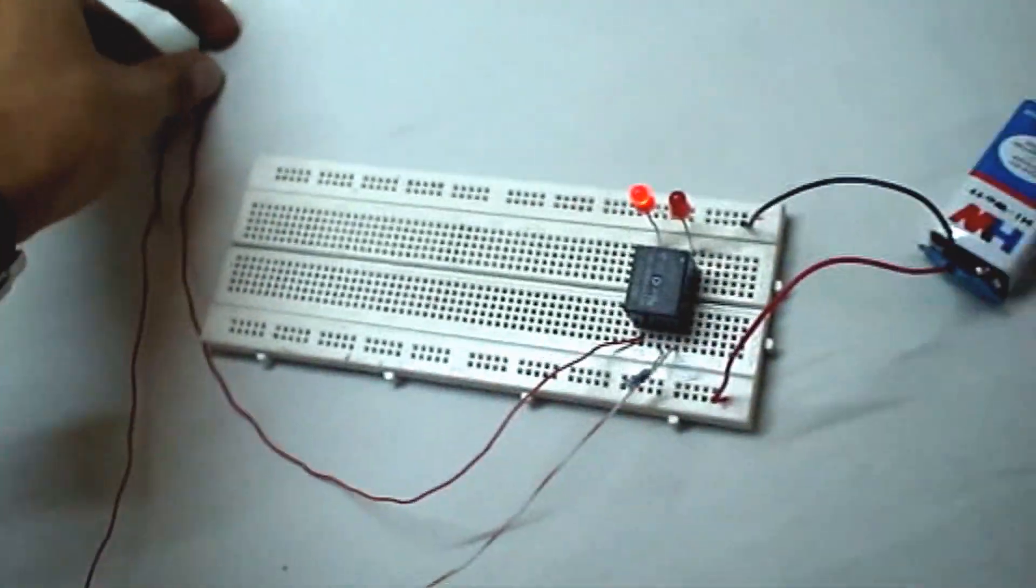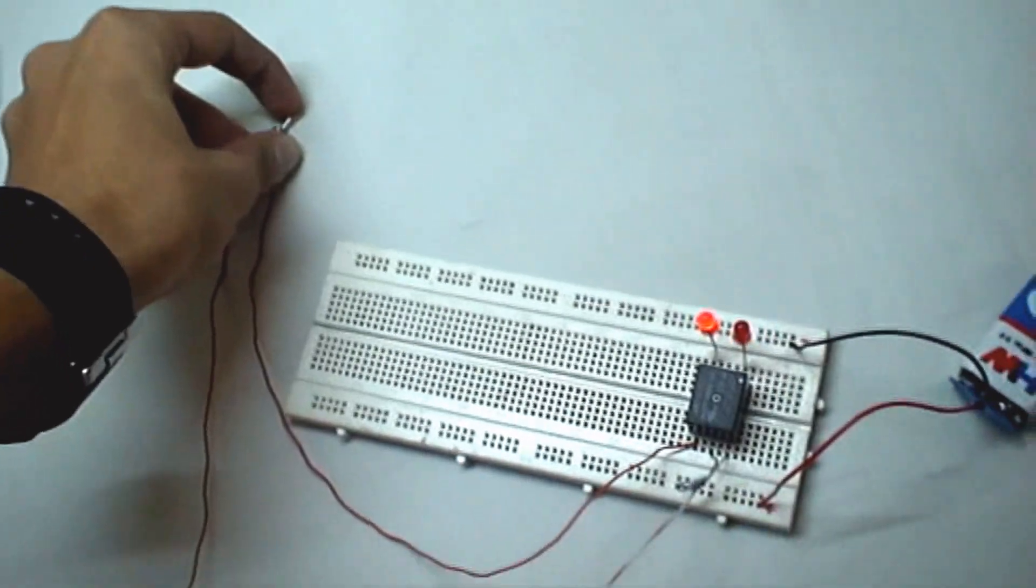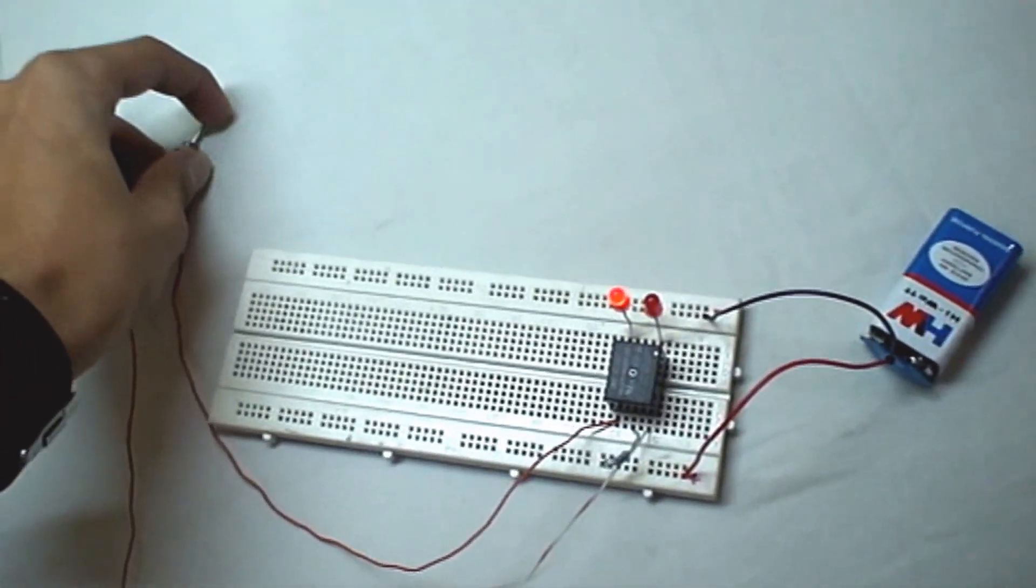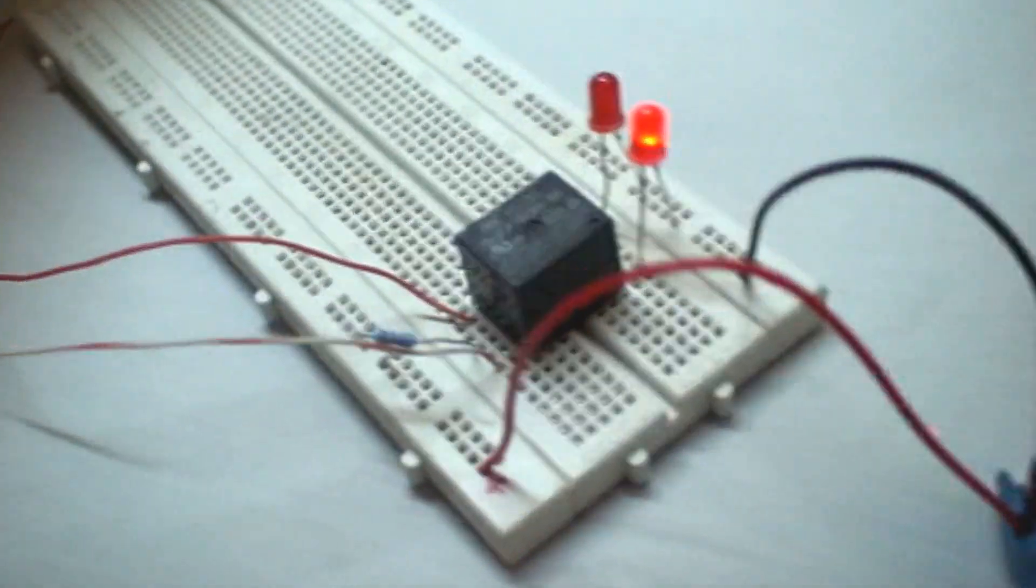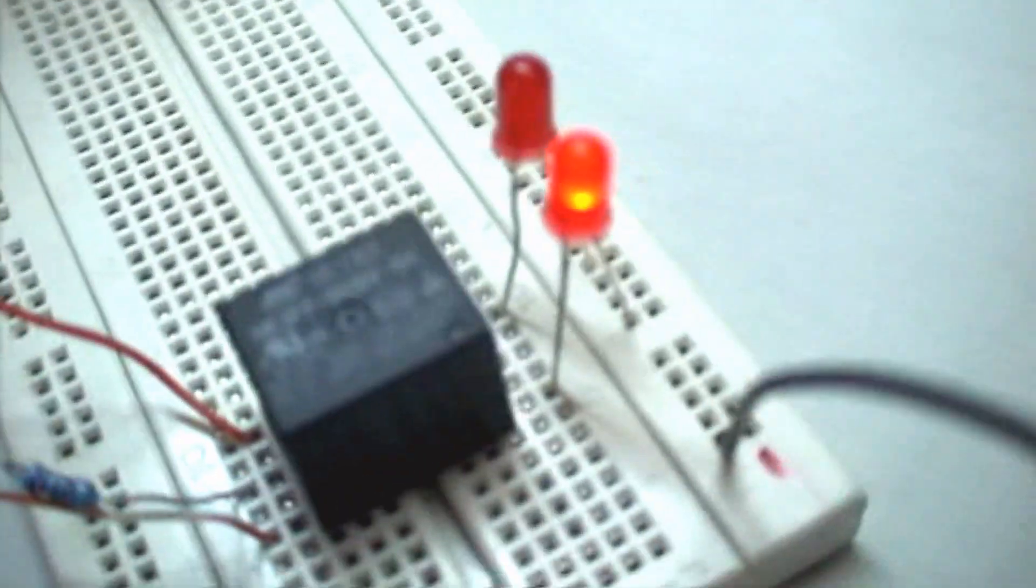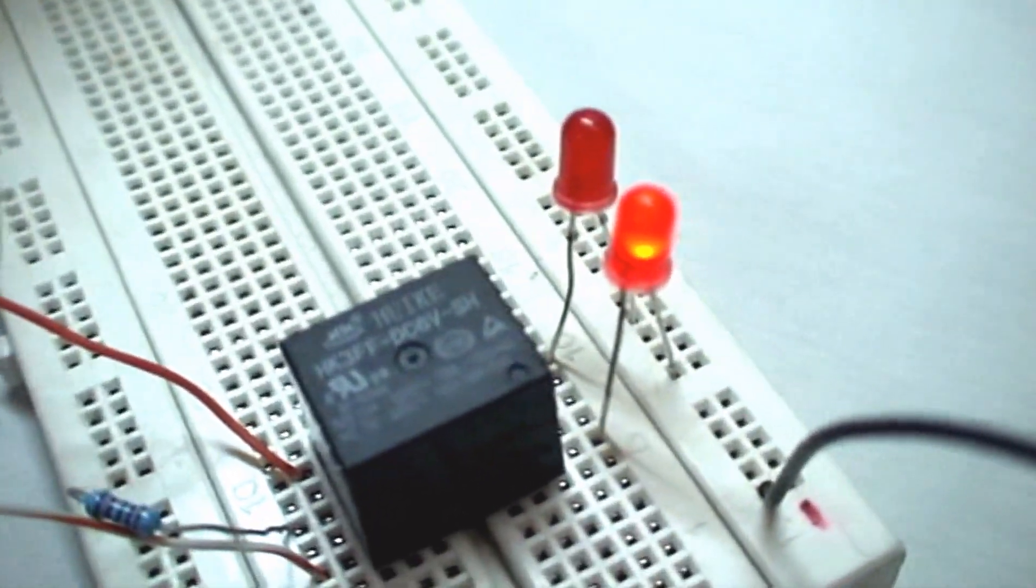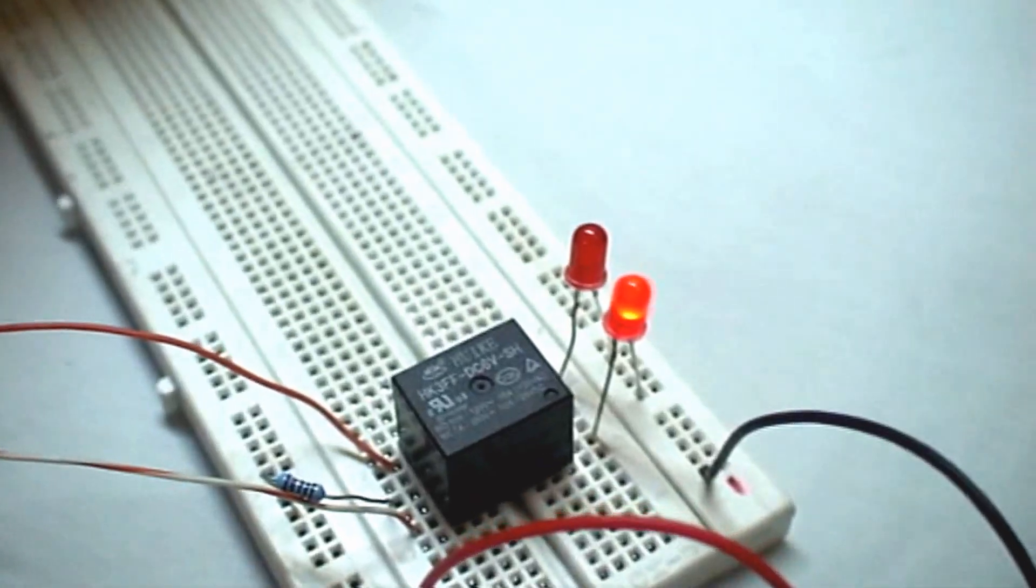This relay is using the 6V power supply to switch between both circuits, whereas both circuits are using the 9V power supply to run.